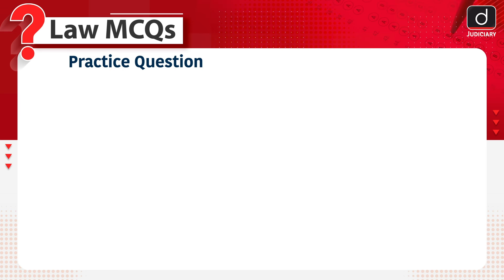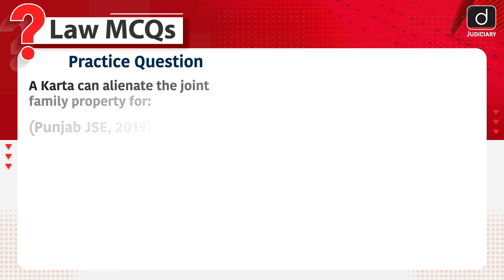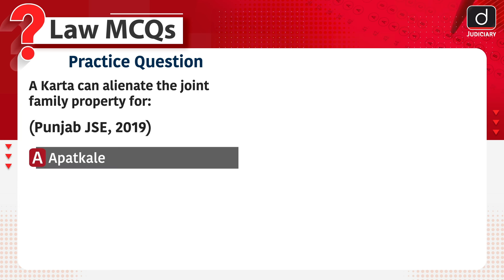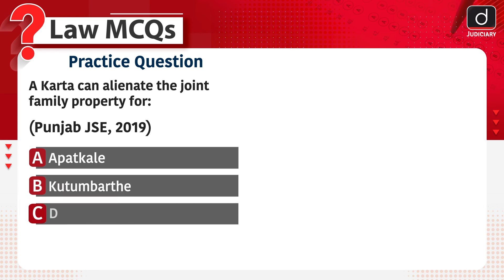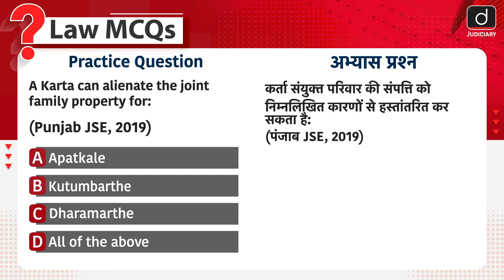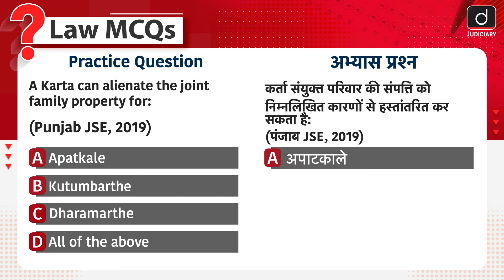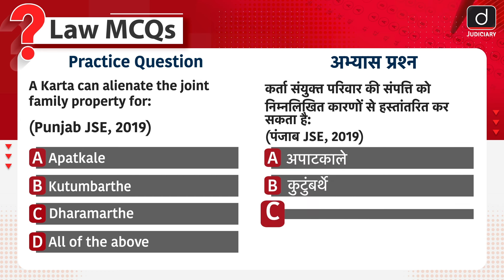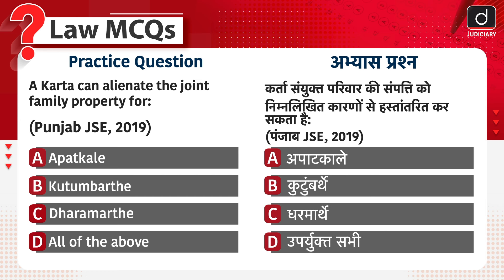Now it's time for the practice question. A Karta can alienate the joint family property for: Apatkaal (emergency/distress), Kutumba Thay (family necessity), Dharma Thay (religious duty), or all of the above. Abhyas question: Karta sanyukt pariwar ki sampatti nimnalikhit karano se hastaantarit kar sakta hai — Apatkaal, Kutumba Thay, Dharma Thay, ya uparokt sabhi. Send the answer of this question in the comment section. Iska uttar hamen comment section mein zaroor bhejiega. Thank you.